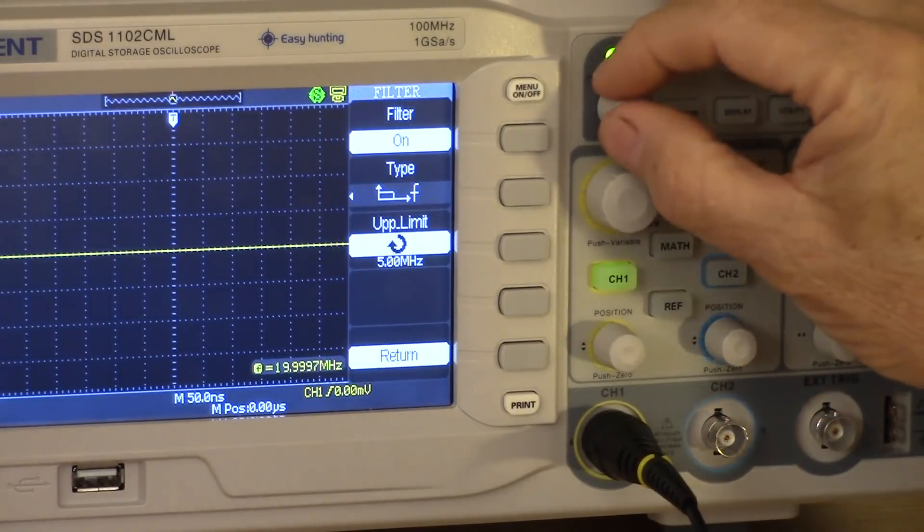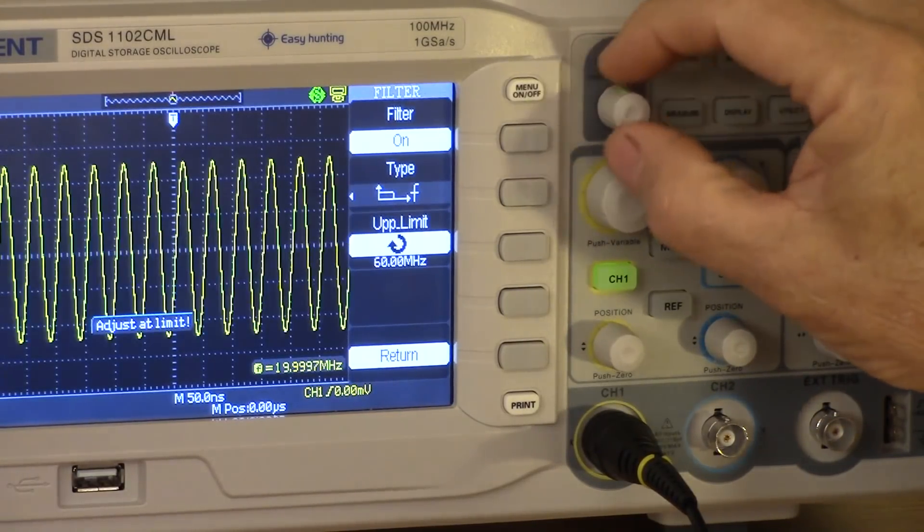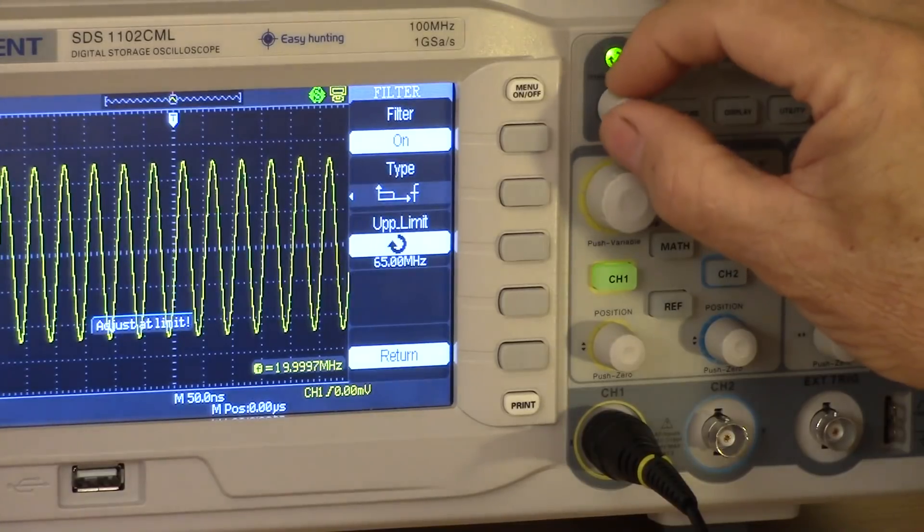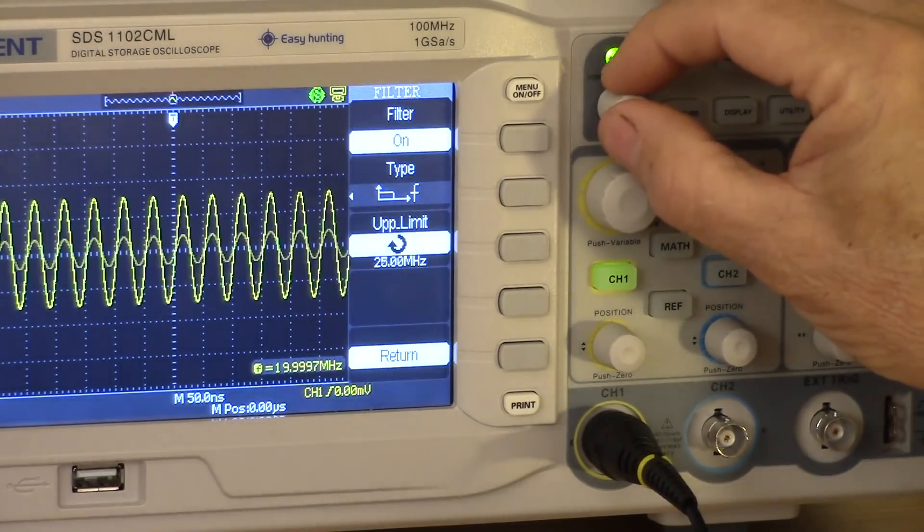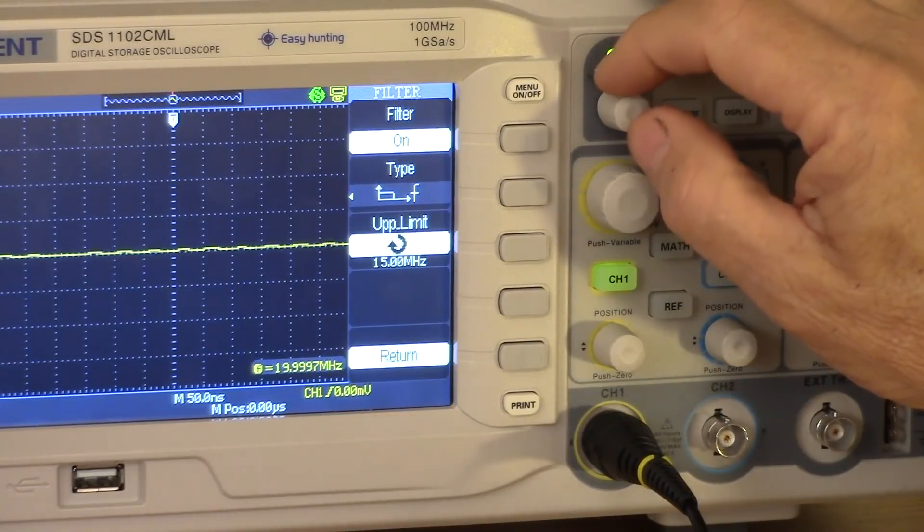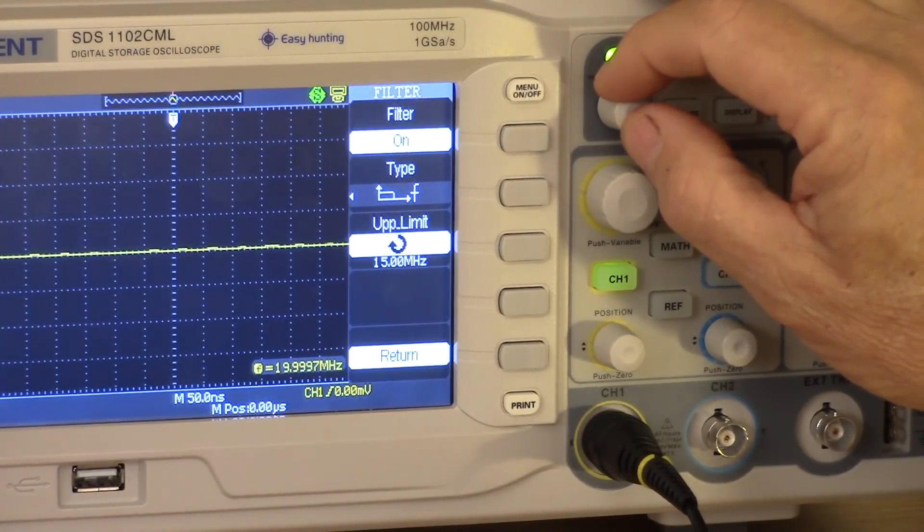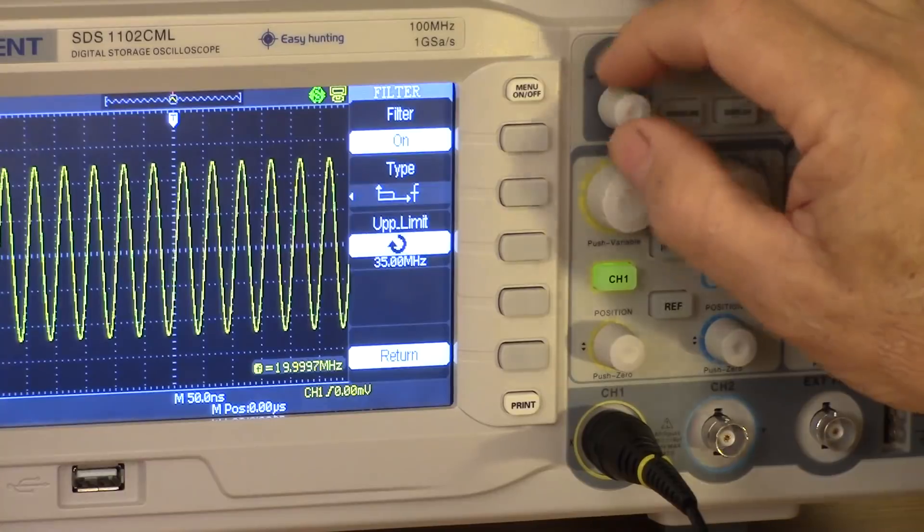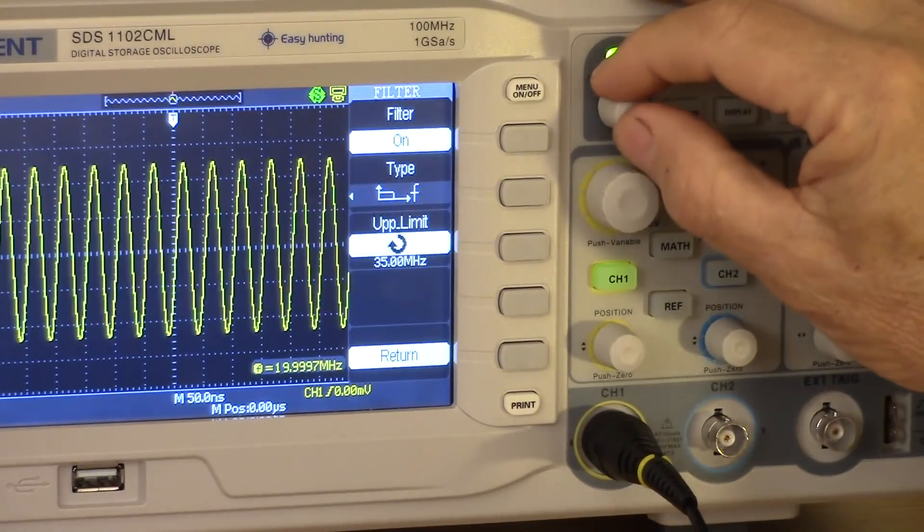And I can then select the frequency. Now I have a 20 megahertz sine wave going in. If I turn this filter down way low, here's 15 megahertz, below the 20 megahertz signal, it goes away. It's completely filtered out. As I crank the filter up, then the signal comes back in.